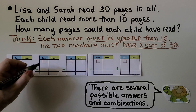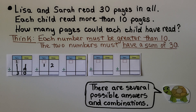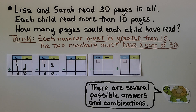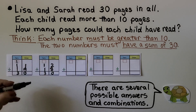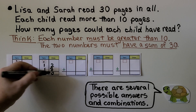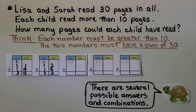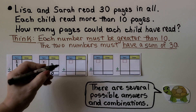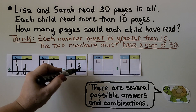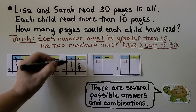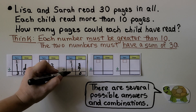We can try 12 — that's more than 10. If one child read 12 pages, we gave one more to the 11, so we take one away from 19 and use 18. Eight plus 2 is 10 — we regroup the 1, put 0 in the ones place, add the three tens: that's 30. The other one must have read 17 pages: 7 plus 3 is 10, we regroup the 10, put 0 ones, and we have three tens — that's 30. So it could have been 13 and 17.